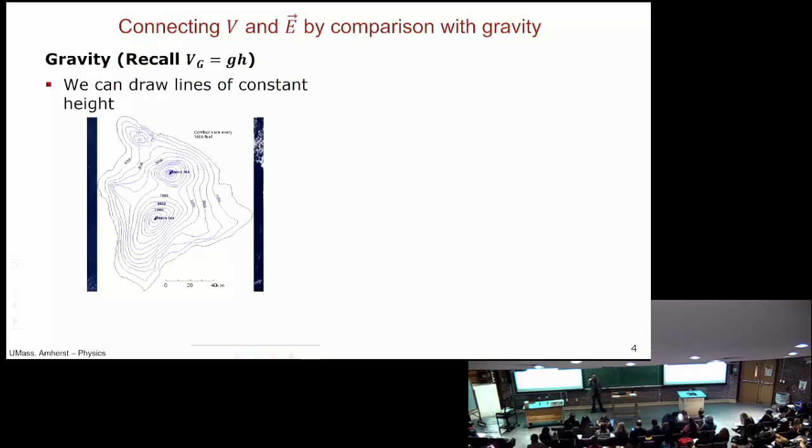These are lines of constant potential, and the field points down the hill. Imagine a bead of water—if you imagine a bead of water up here on Mauna Loa, it's going to kind of go down like that.